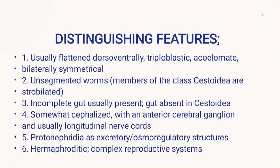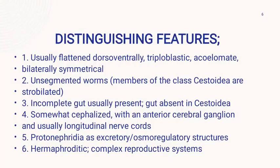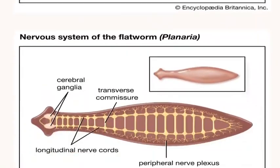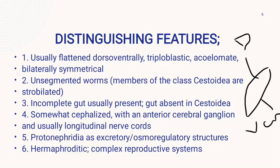The dorsal side is the outer surface of the animal — the side facing the environment is known as the dorsal side. As you can see here, this is the dorsal side facing the environment, and this is the ventral side. If we consider a human being, the side having the vertebral column is the dorsal side, while the side having the ribs and central organs is the ventral side.